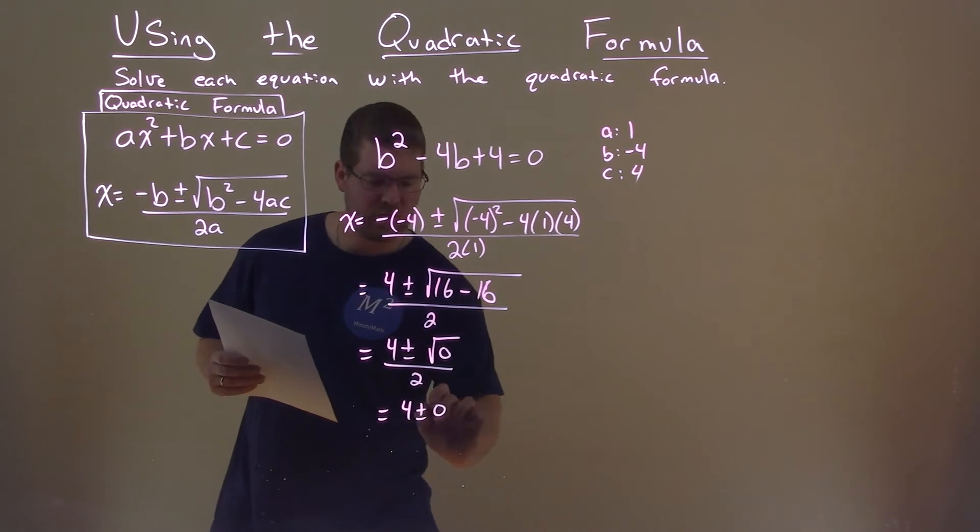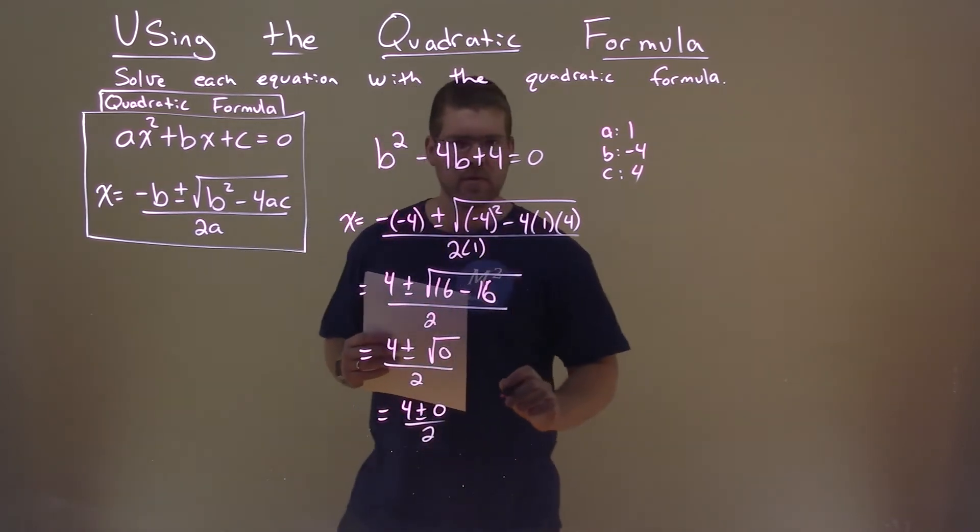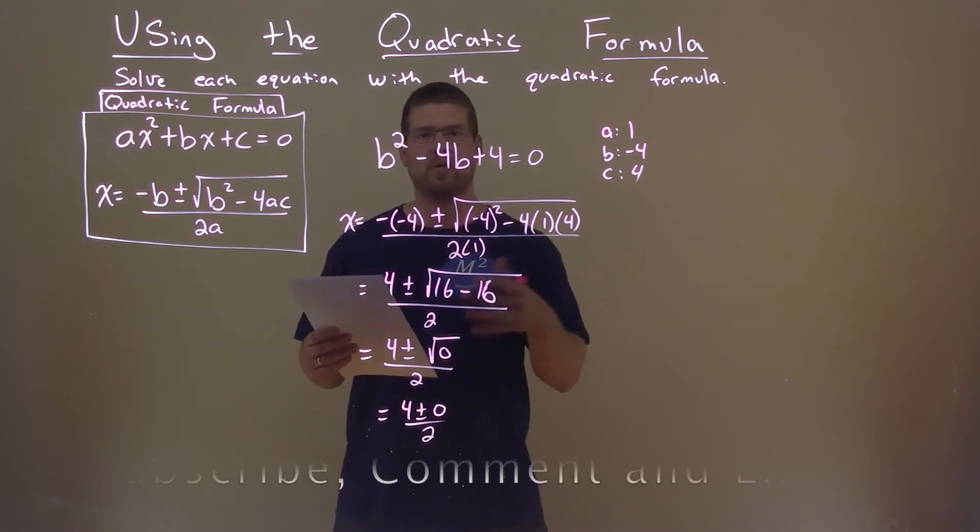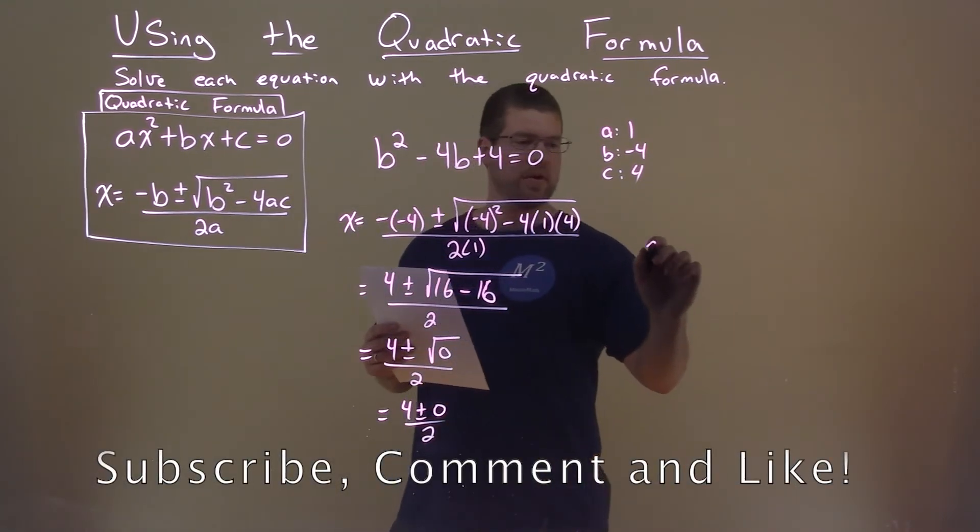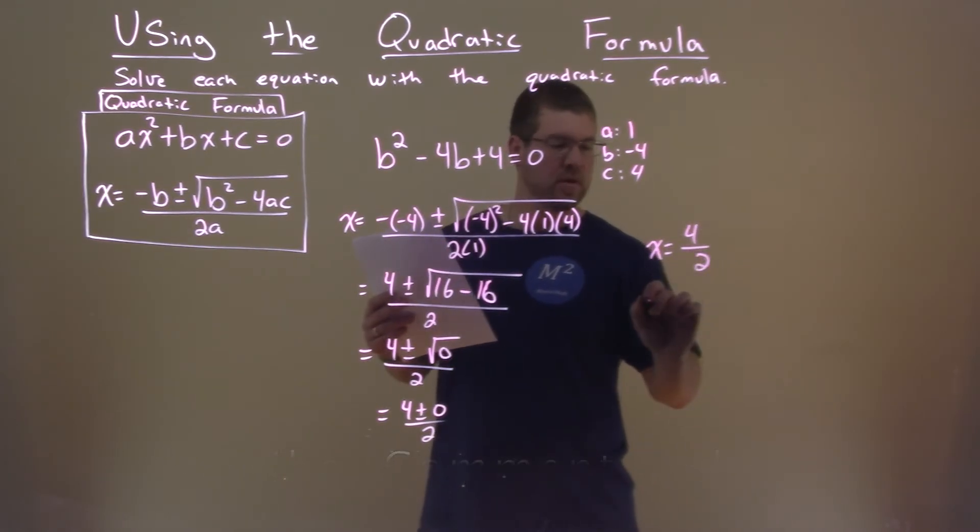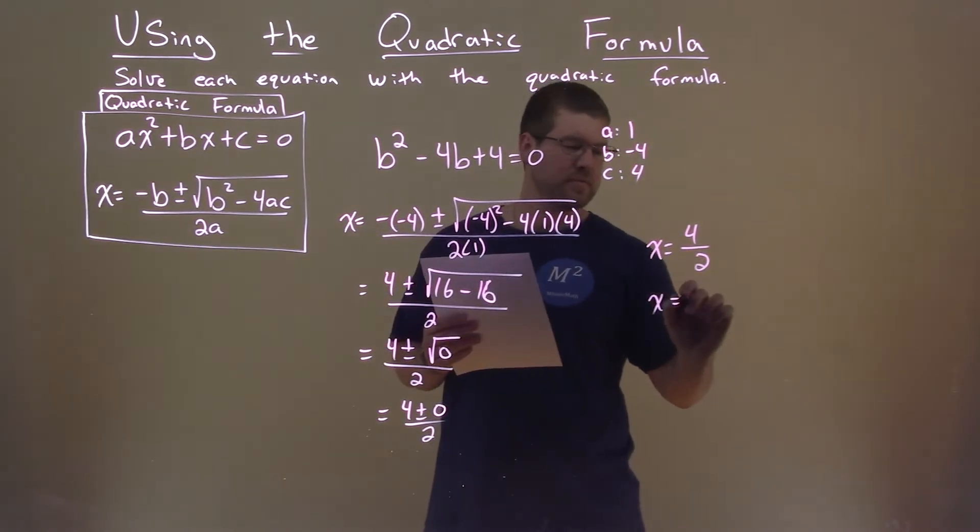So we have 4 plus or minus 0 over 2. That doesn't really change anything. We have two options, but it's 4 plus 0 and 4 minus 0, both the same thing. So x just equals 4 over 2. And 4 over 2 is 2.